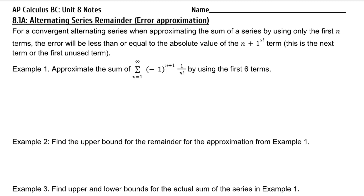For a convergent alternating series, when approximating the sum of a series by using only the first n terms, the error will be less than or equal to the absolute value of the n plus first term. This is the next term, or the first unused term. Approximating the sum of the series using only the first n terms is called S sub n.